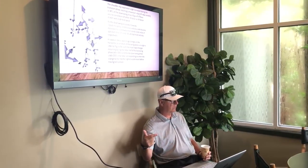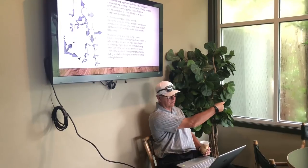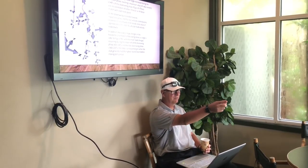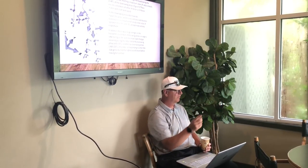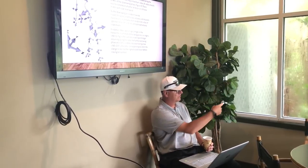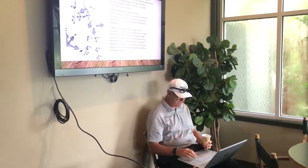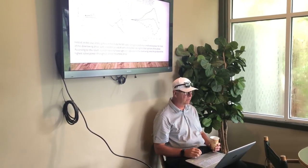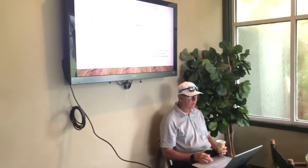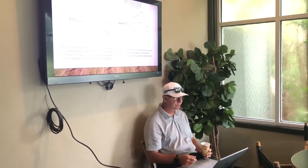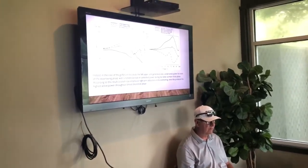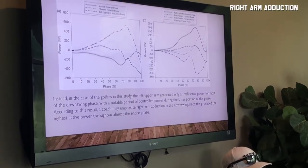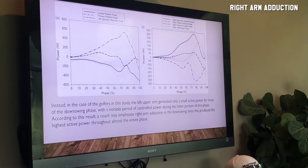That's the functional swing plane. If it's horizontal, which direction is that? Towards the target — not forward. Those are things I get to learn from you guys. Looking at where the power comes from: the highest contributor is right upper arm adduction. These findings are for right-handed golfers.